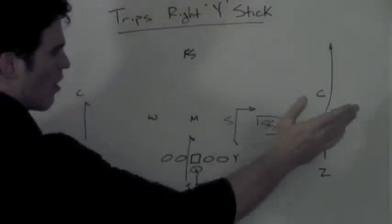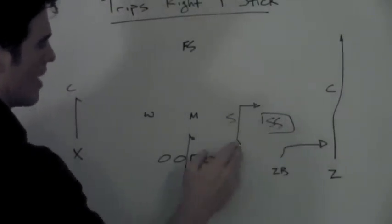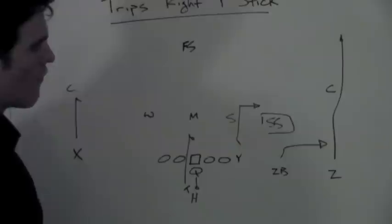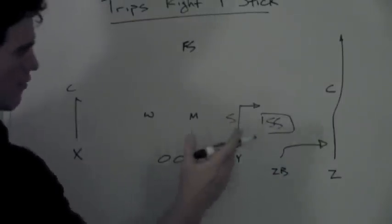The slot receiver is going to run an arrow, which is going to get no deeper than one or two yards, and run to the sideline. The tight end is going to run a stick route or a five-yard out route, and the quarterback's job is to see which one of these two guys the strong safety takes or the flat defender takes.